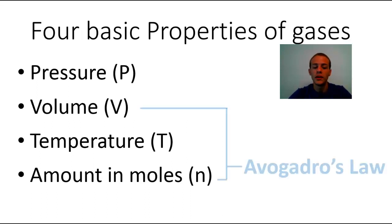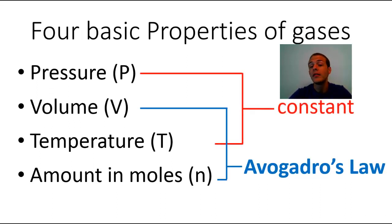Avogadro's Law is concerned with the relationship between the volume of a gas and the amount of that gas if you assume that the pressure and the temperature of the gas are kept constant. So what is the relationship between the volume of the gas and how much gas is in that volume while you keep the pressure and the temperature constant?